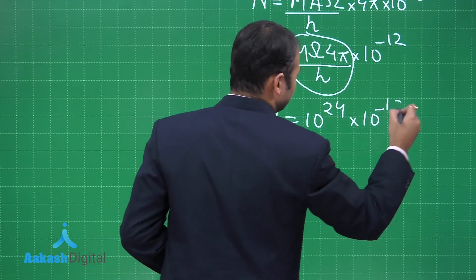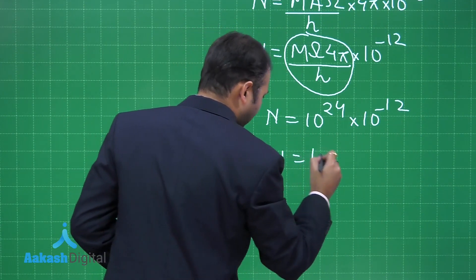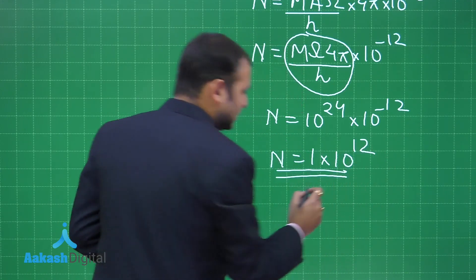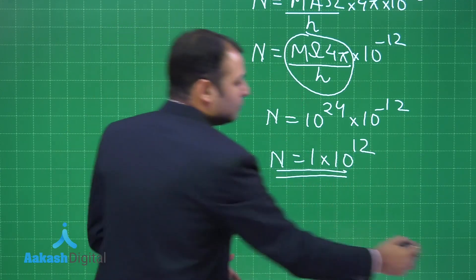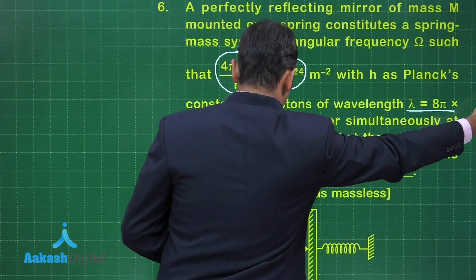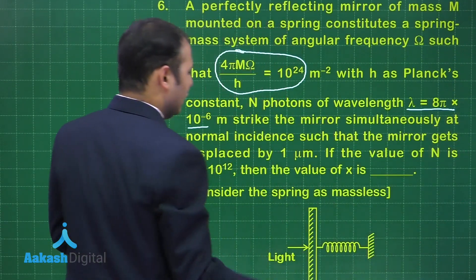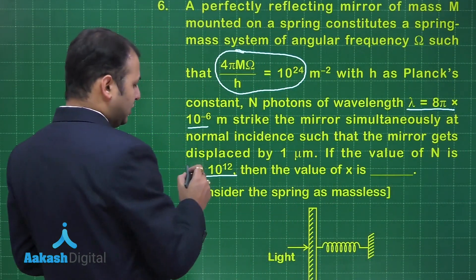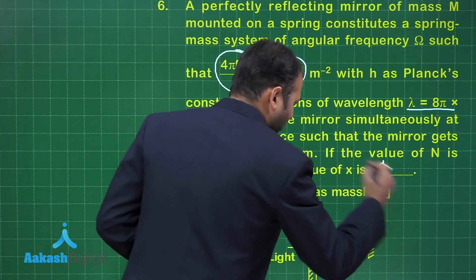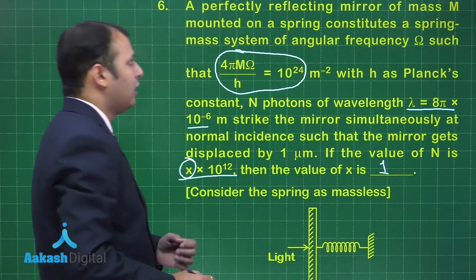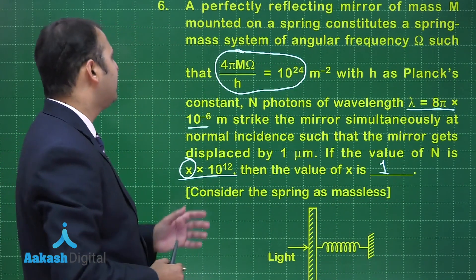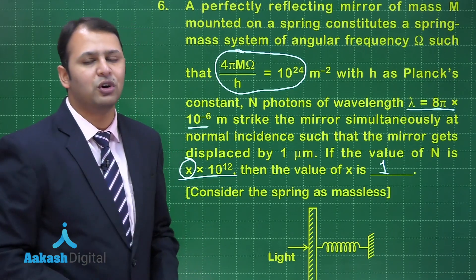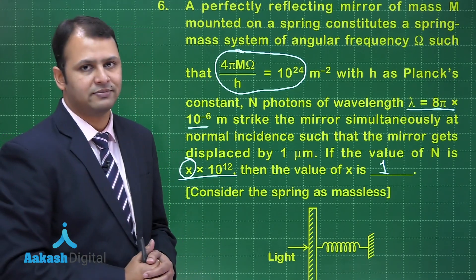Putting in this value, n equals 10 to the power 24 times 10 to the power minus 12, so n equals 1 into 10 to the power 12. Comparing with the given form x into 10 to the power 12, the value of x is 1. I hope you have understood the solution very well. This was the last question for section 2. Now let's move on to section 3.